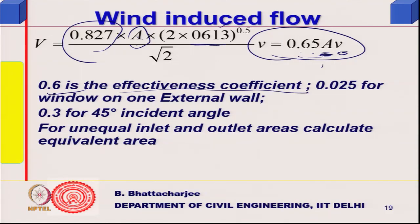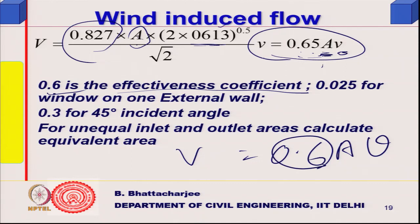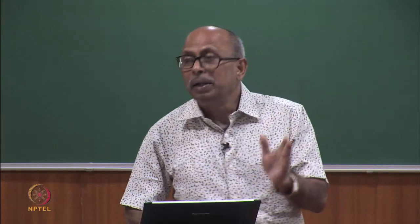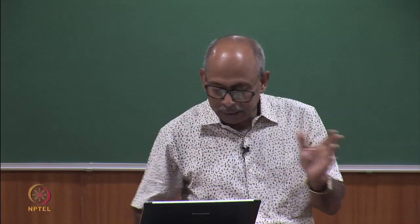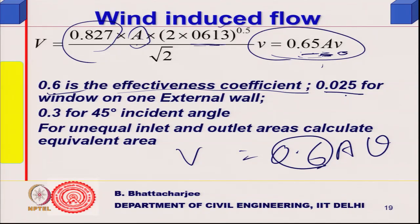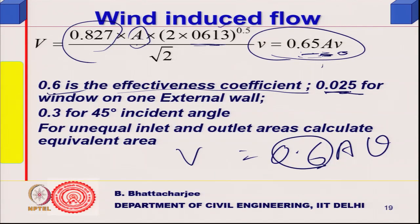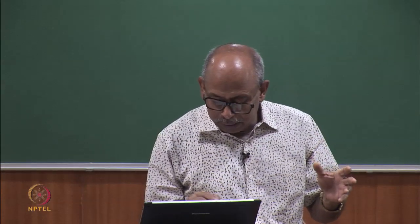This constant 0.6 is called the coefficient of effectiveness. So flow in m³/s equals 0.6 times A times outside velocity — for cross ventilation with windows on both windward and leeward sides. For a window on only one side (no cross ventilation), the value is 0.025. For a 45-degree angle of incidence, it is 0.3.